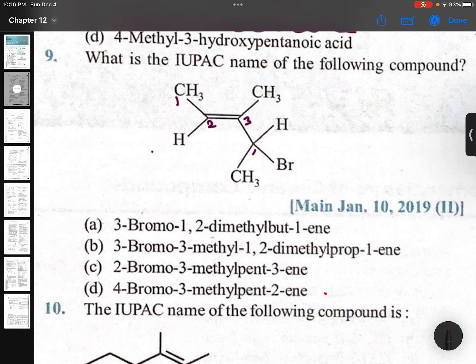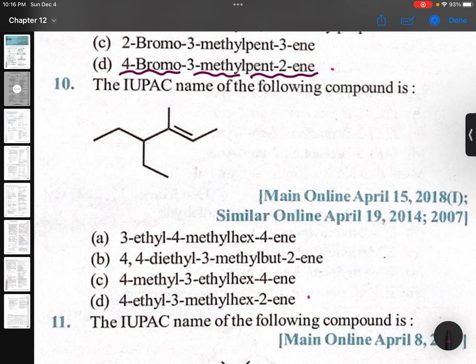Third place, fourth place, and fifth place. So the name should be 4-bromo - only one name is there - 4-bromo, third place methyl, 3-methyl, second place double bond, pent-2-ene.